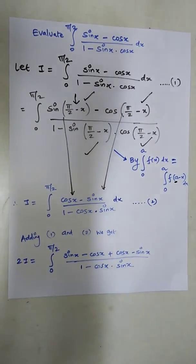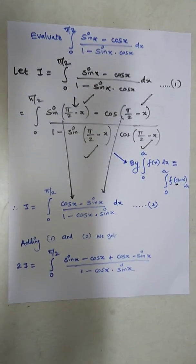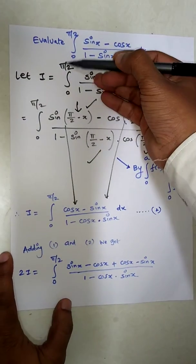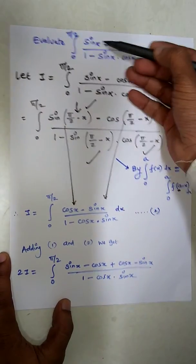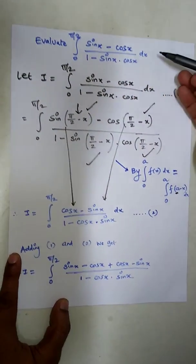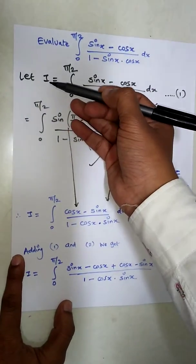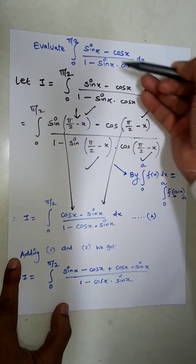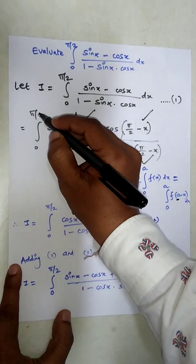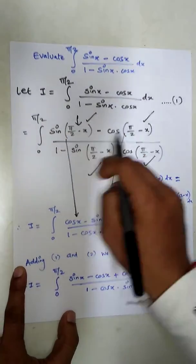Hello friends, today's topic is integration. One question based on definite integration: evaluate the integral from 0 to π/2 of (sin x − cos x) / (1 − sin x · cos x) dx. Let I be equal to this integral as written.